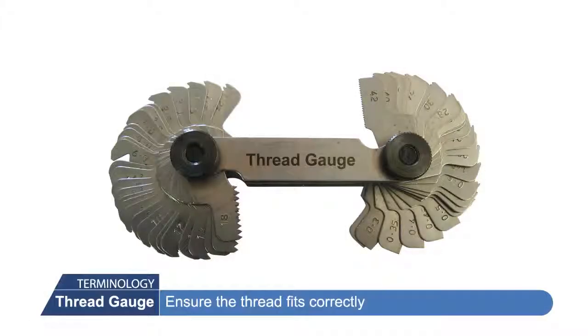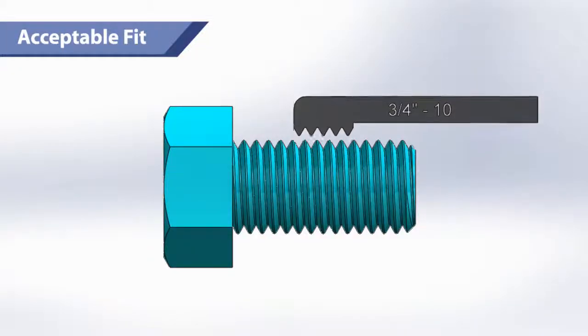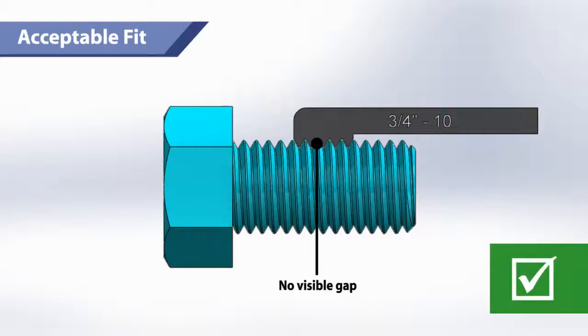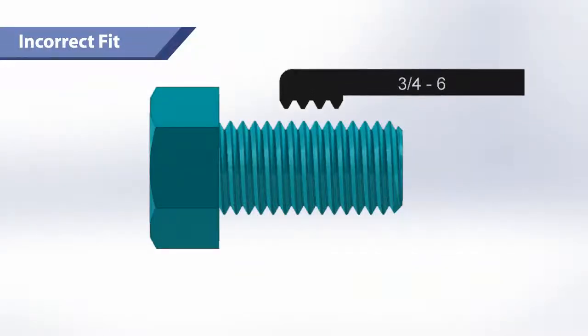Thread gauge: ensure the thread gauge fits correctly. An acceptable fit shows no visible gap. An incorrect fit is also demonstrated.